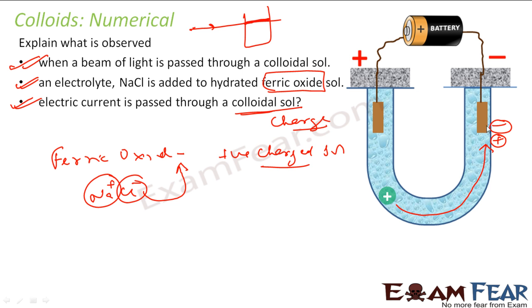So two things will happen. First, all these particles will move towards one of the electrodes depending on the charge. If it is positive charge, it will all move towards negative electrodes. If it is a negative charge sol, it will all move towards positive charge electrode. And once it reaches the electrode, it will lose its charge and coagulate.